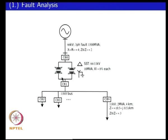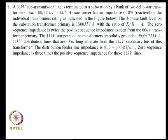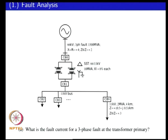The outputs of the transformers combine to form the low-voltage bus at the substation, and you have 8 feeders radiating out from the substation. Each feeder is rated at 2 MVA at 11 kV. The first problem is to determine what is the fault current for a three-phase fault at the transformer primary.